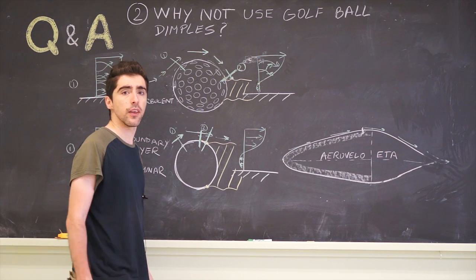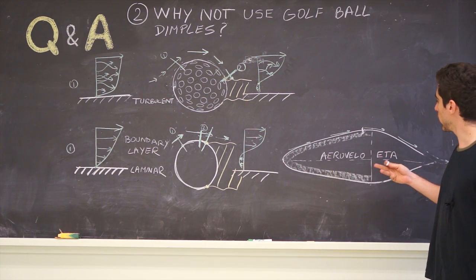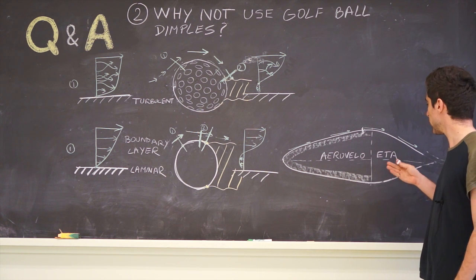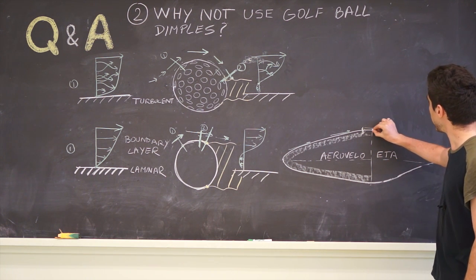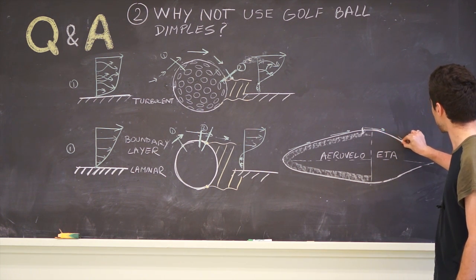Okay, so why don't we use this? This is how the Aravella ETA shape looks, seen from the top. As we can see, we have a tail section here.